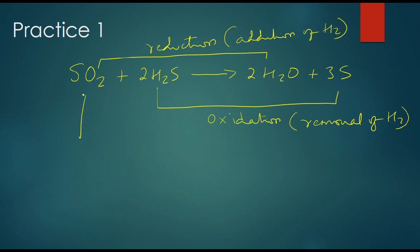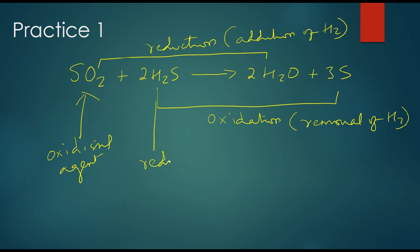The substance which is reduced has hydrogen added to it — this is the reduction of hydrogen. The substance which is oxidized loses hydrogen — this is the oxidizing agent. H2S is the reducing agent, and the oxidizing agent is on the left-hand side.